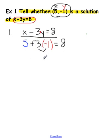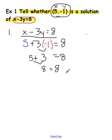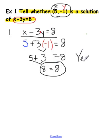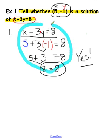PEMDAS says to multiply first, so negative 3 times negative 1 is positive 3. Bring everything else down. PEMDAS says to add next, so 5 plus 3 is 8. Bring everything else down. Notice this has taken me 4 lines — it shouldn't take you anything less than that. Now is 8 equal to 8? Yes. So when it asks whether this ordered pair is a solution, it works — so the answer is yes. Write that at the end, and your work to the left supports it.